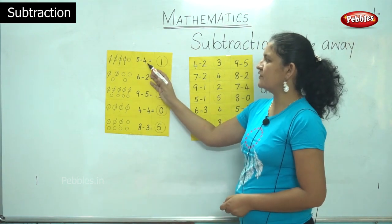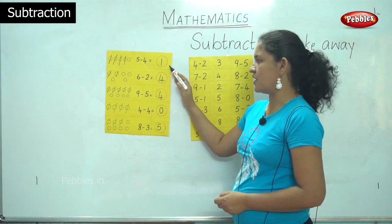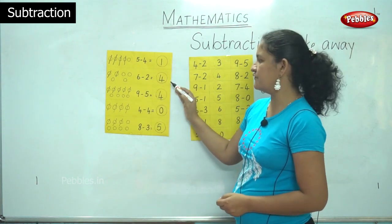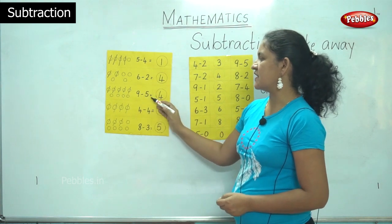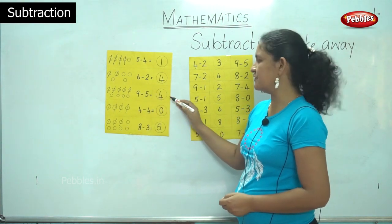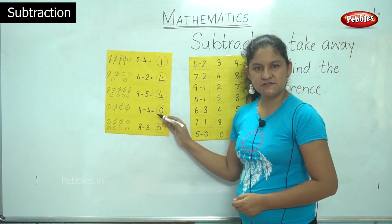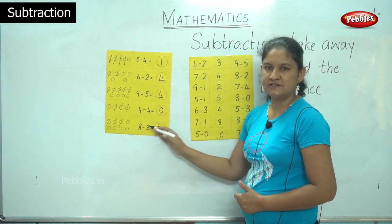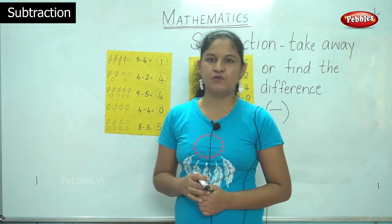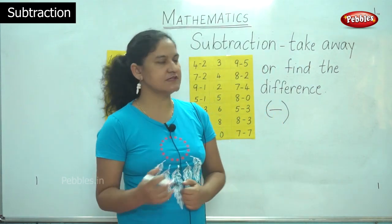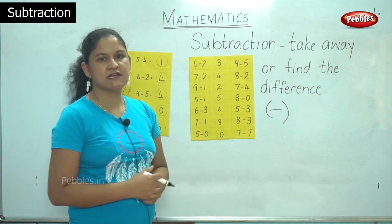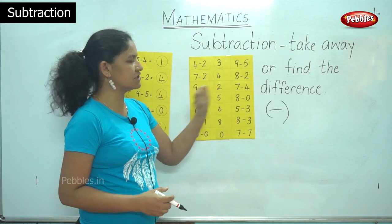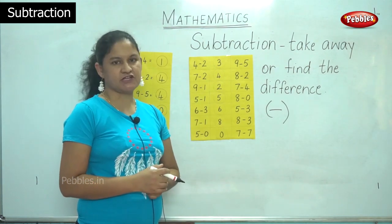So to recap: 5 take away 4 gives me 1; 6 minus 2 gives me 4; 9 minus 5 gives me 4; 4 minus 4 gives me 0; and 8 minus 3 gives me 5. I hope you have understood the concept of subtraction using this small chart. Now we are going to move on to matching of the subtraction.